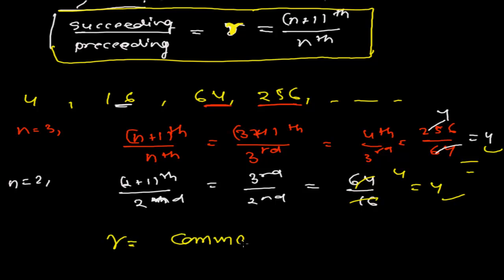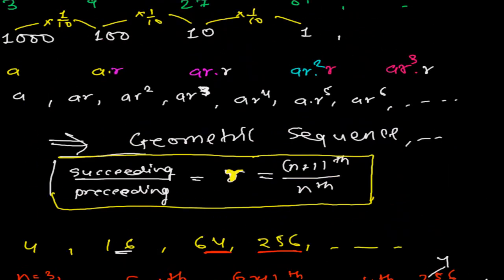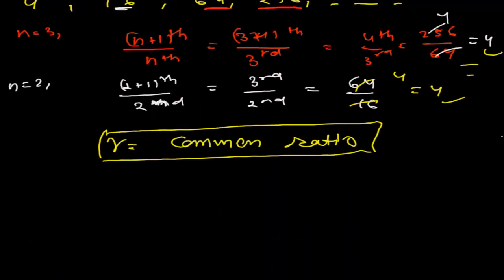Whenever you divide any succeeding term by the preceding term in a geometric sequence, you always get a fixed ratio, which is called the common ratio. That's all about geometric sequence for now. In the next video we are going to learn the properties of geometric sequence. Bye-bye!